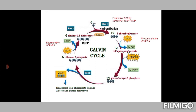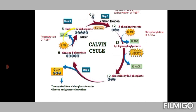RuBP regeneration involves conversion of 10 molecules of glyceraldehyde 3-phosphate to ribulose 5-phosphate. Then six molecules of ATP are further used for the step-by-step regeneration of six molecules of ribulose 1,5-bisphosphate.